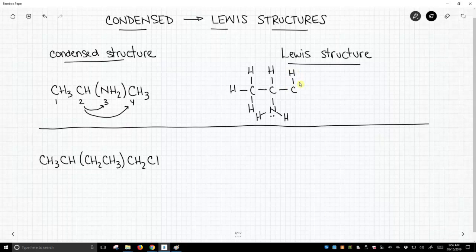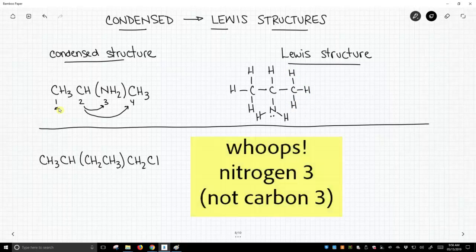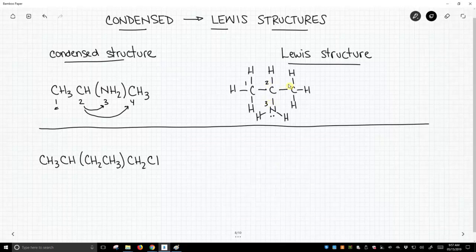So in this case, carbon 2 is attached to carbon 1 going backwards, and going forwards, it is attached to carbon 3 and 4. So if we were to number our atoms, this is how they translate onto the page in the Lewis structure.